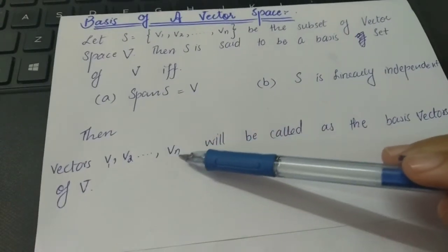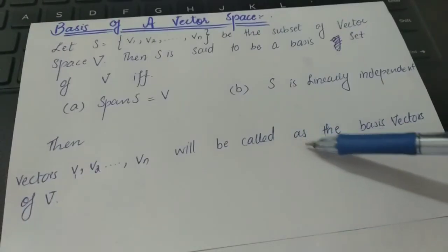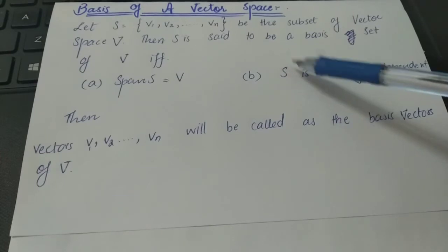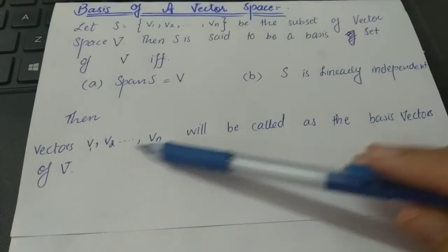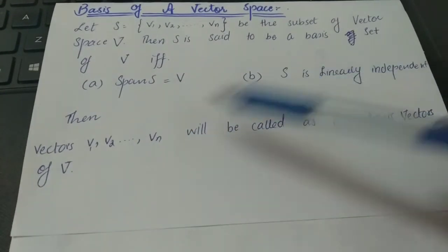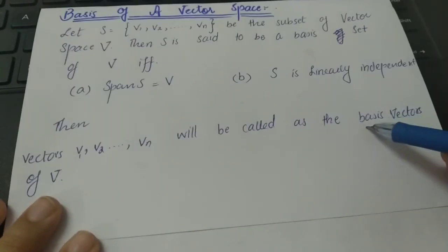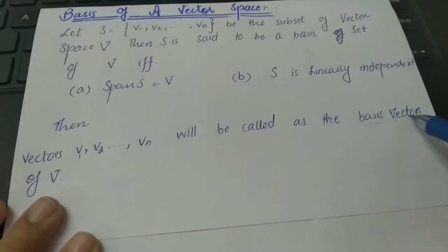Then vectors v1, v2 and vn will be called as the basis vectors of V. If we have two conditions satisfied, then we will say that these vectors are the basis vectors of V.